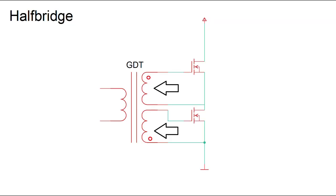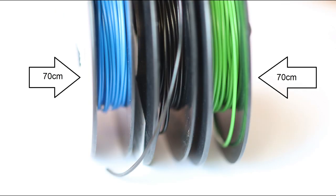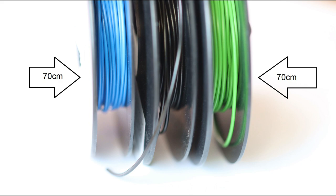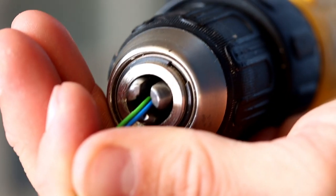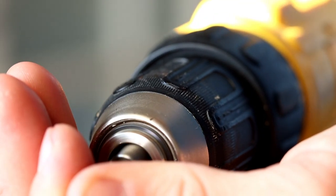Now come the secondary windings. But first, we have to twist these two wires together. We can do this, for example, with a battery-powered screwdriver. You can also do it by hand. Clamp both wires and hold the other two ends tightly. And go!